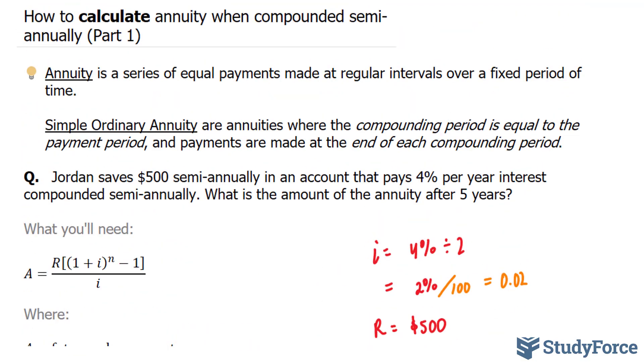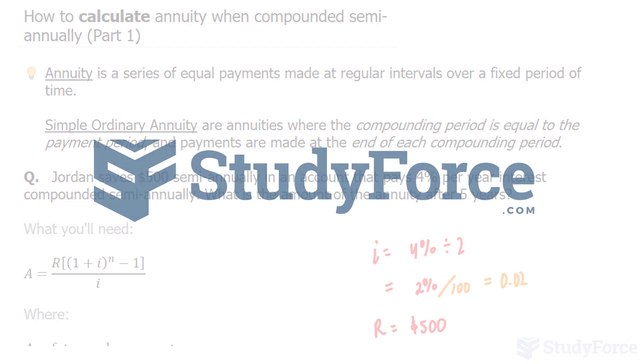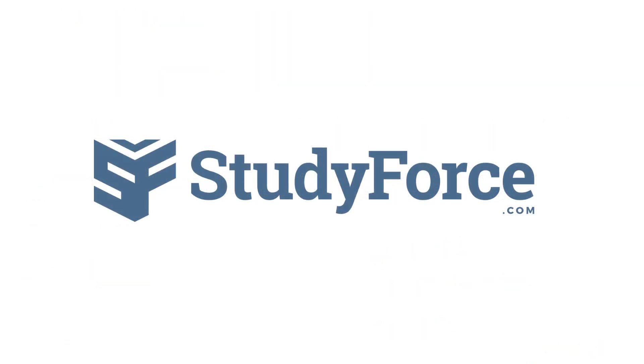And there you have it. That is how to calculate annuity when compounded semi-annually. If you found this tutorial helpful, please support our channel by subscribing or by liking this video. If you have any further questions, visit our website at studyforce.com. We're an online service for students seeking free homework help. See you soon.